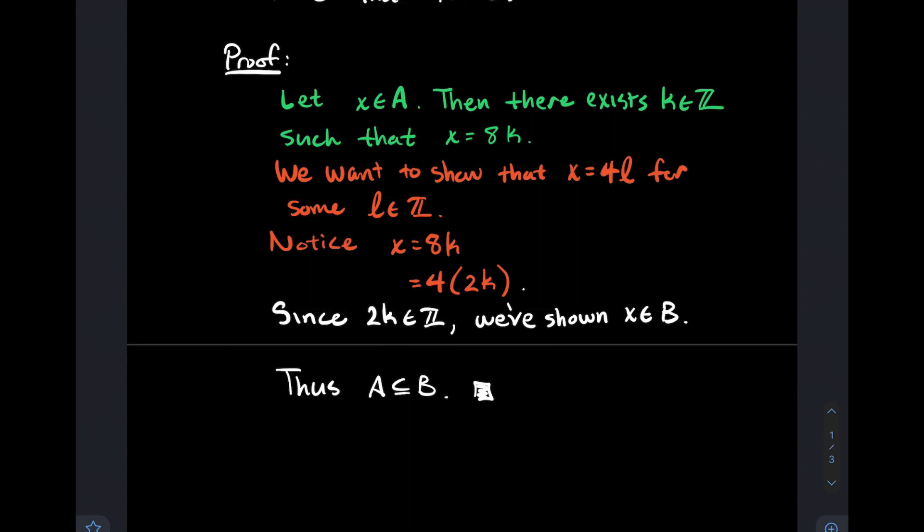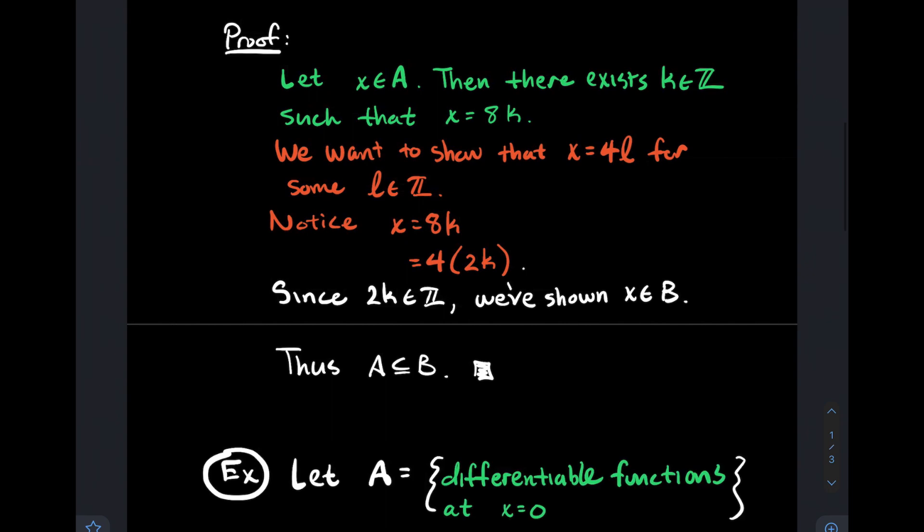The logic there is that all the elements of A should be elements of B. There wasn't anything special about the element we picked. In other words, it was an arbitrary element. We've shown that it's an element of B, so that tells me that A is a subset of B. That's our first example.